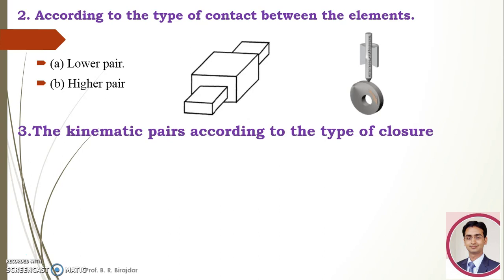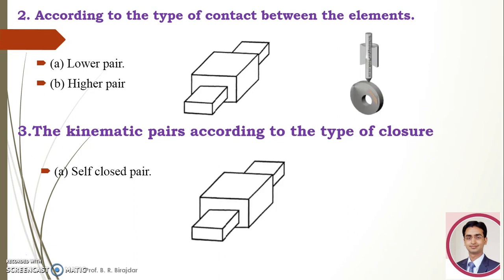The third classification is kinematic pairs according to the type of closure. These are classified into two types. First is the self closed pair: when the two elements of a pair are connected to give relative motion without the help of any external force — these two elements are in contact without any external force. That is what we call the self closed pair.